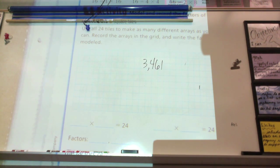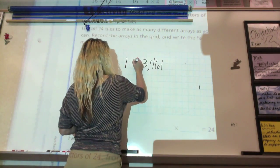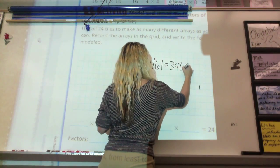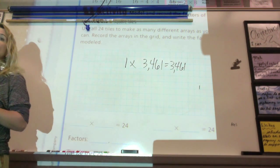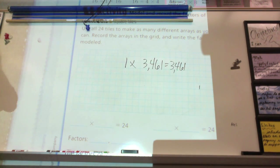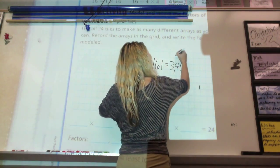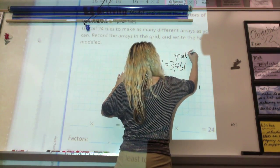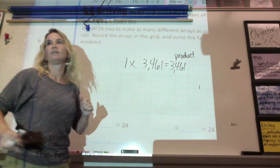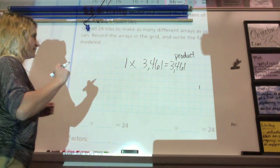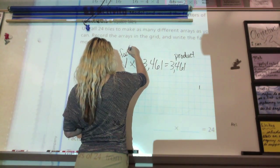What array do I already know that I can make for that? Right. I can do 1 times that number. And it equals 3,461. There you go. So, I know that I can do at least 1 times that. Does anybody remember when I have two numbers and I multiply them? This one is called the product. What are these two called? Factors.